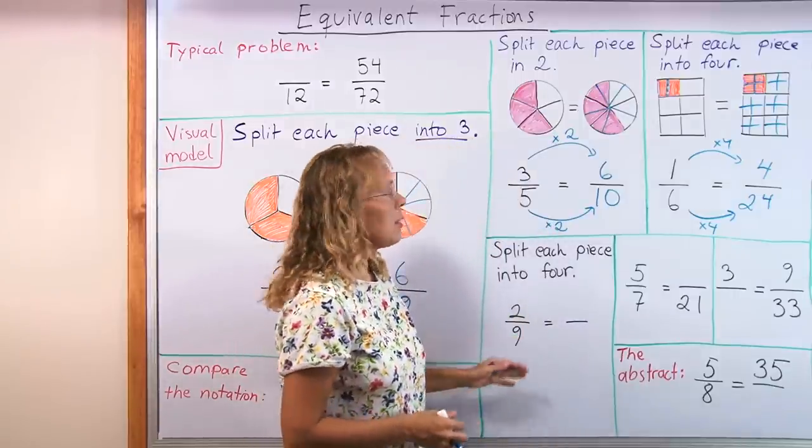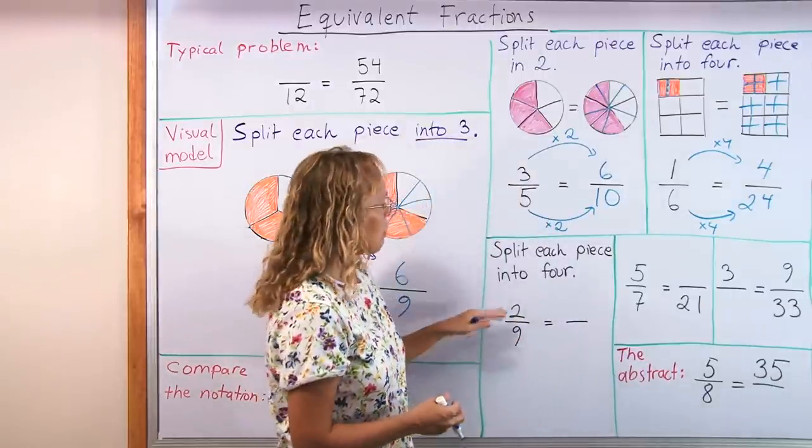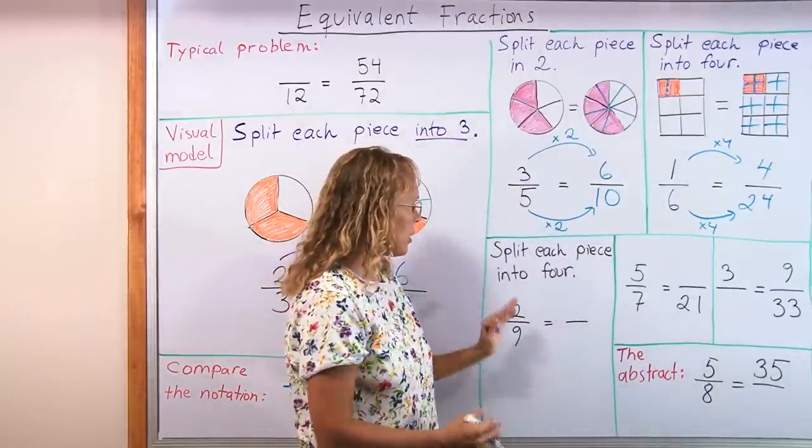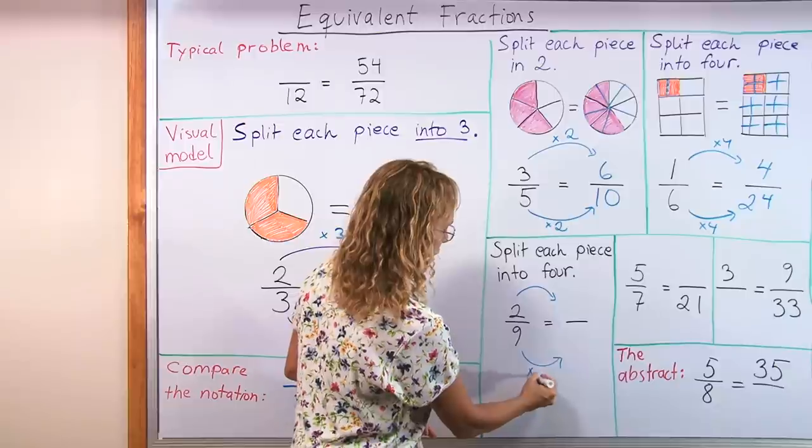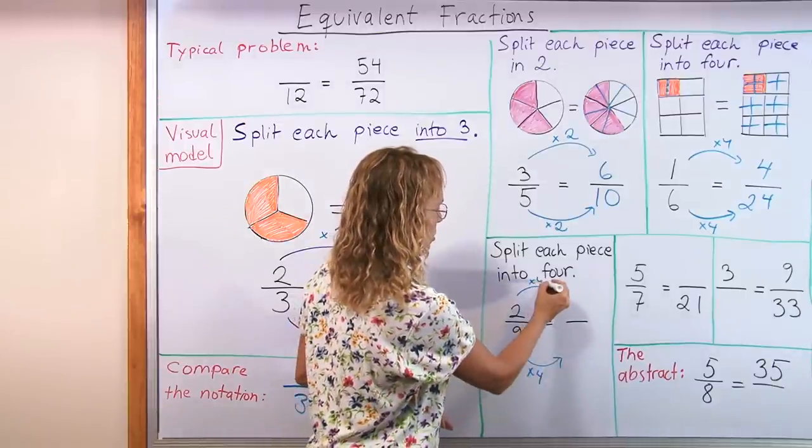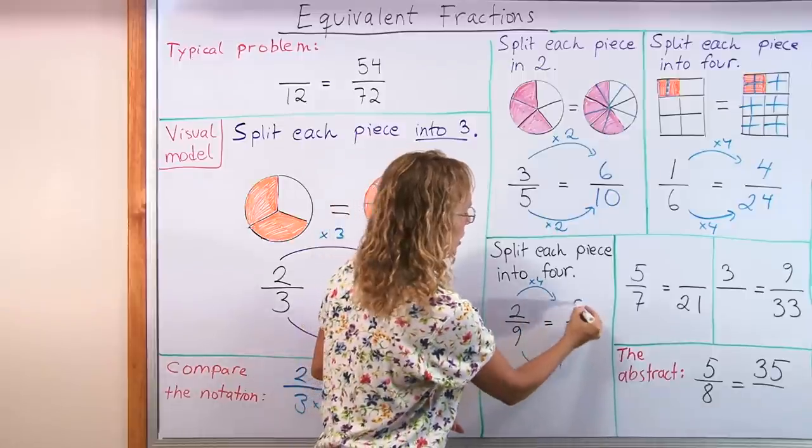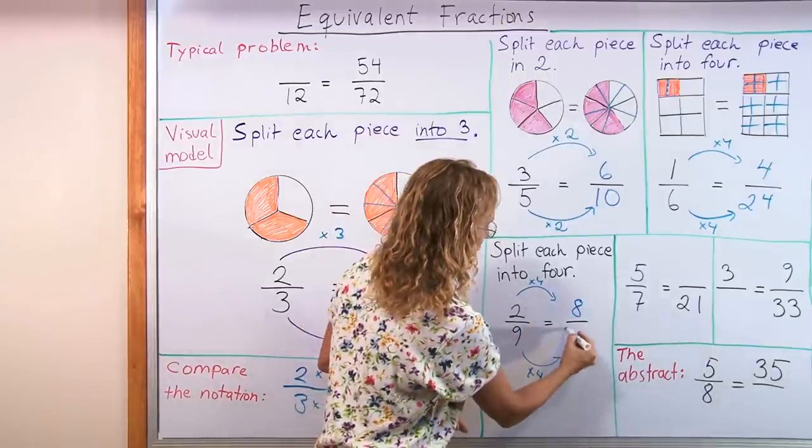Then students can practice without the pictures. Where you might say split each piece into four. And then they would draw the arrows to help them. Put times 4 times 4. Then 2 times 4 is 8. 9 times 4 is 36.